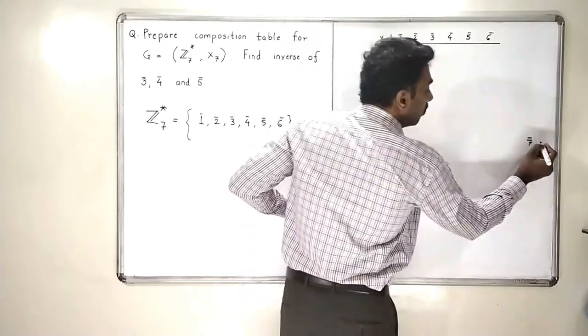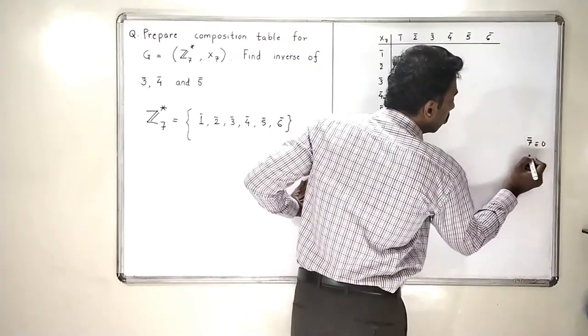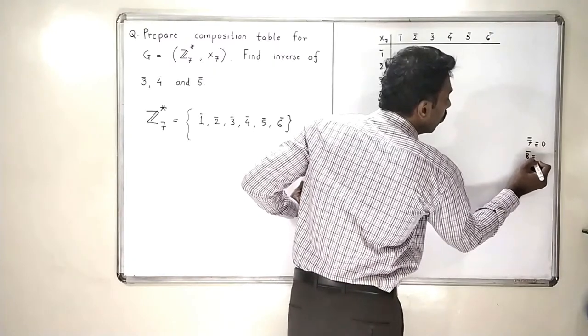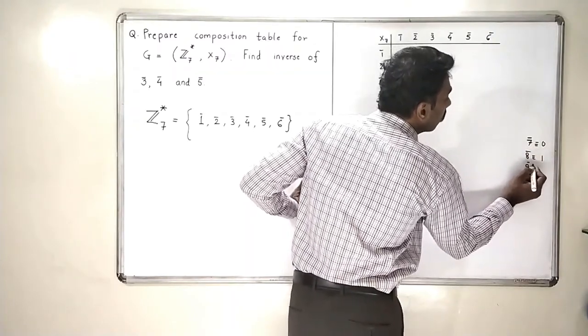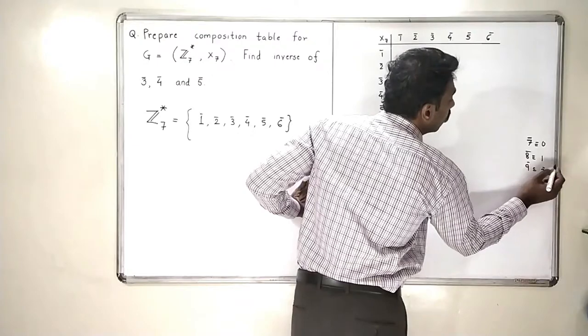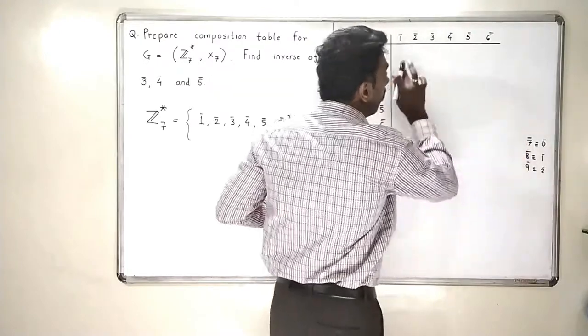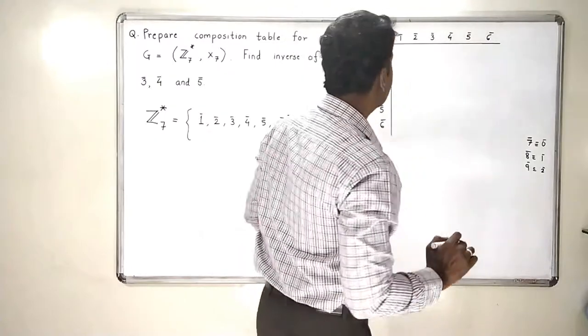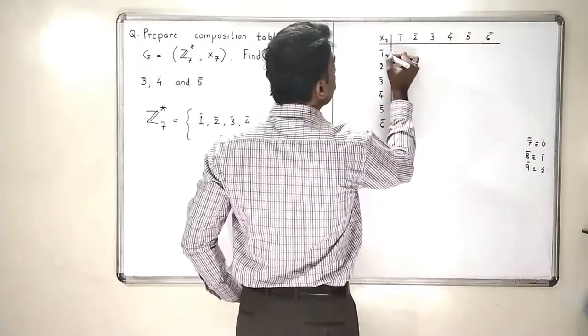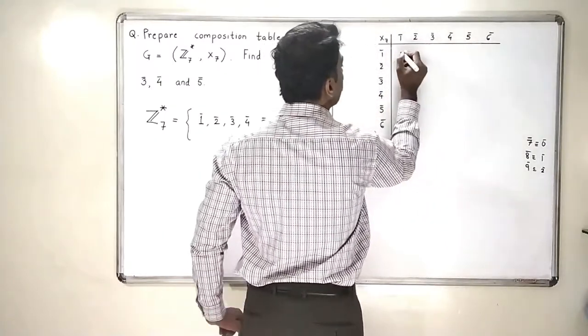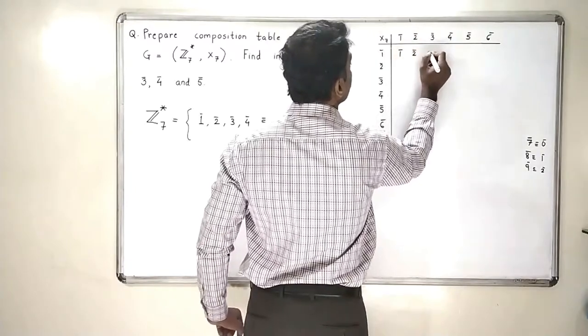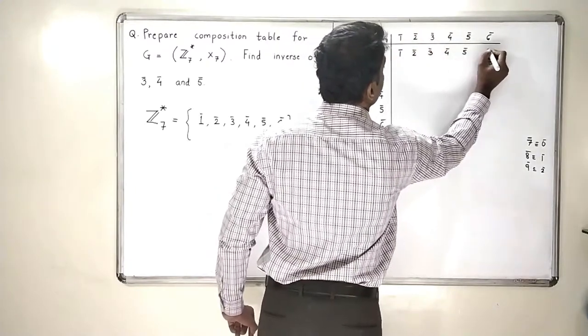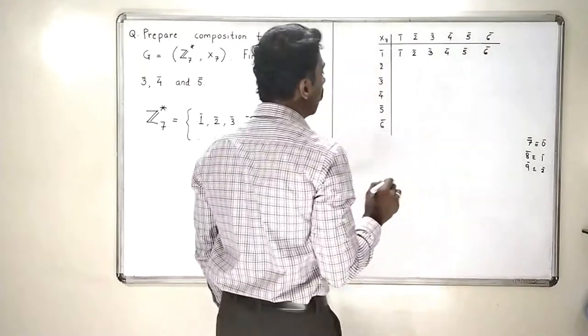I am going to use multiplication modulo 7. So, 1 bar means if 7 comes, actually 7 will never come, but 7 is equivalent to 0, 8 is equivalent to 1 and 9 is equivalent to 2 bar and so on. So, this is the way I am going to do this. Let me show you the first and the second line. 1 bar multiplied by all these elements will give you the same element. So, 1 bar, 2 bar, 3 bar, 4 bar, 5 bar, 6 bar.